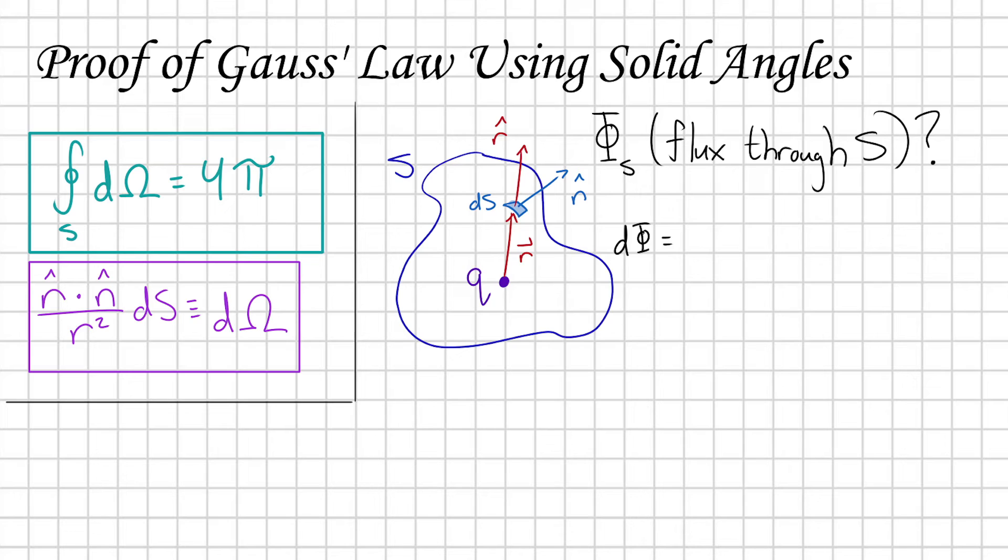We know that the electric field produced by this charge is going to follow Coulomb's law. So at the patch, that's going to look like 1 over 4π ε₀ times Q over r squared in the r-hat direction. And then to find how much of that electric field is actually pushing on this patch, we have to dot it with the dS n-hat vector.